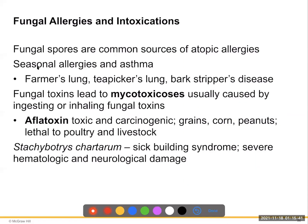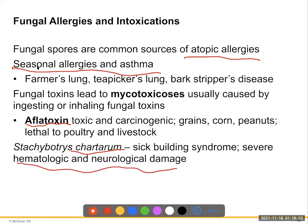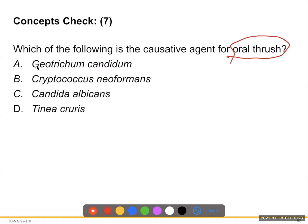Any fungus can be implicated in infections when immune defenses are compromised. Geotrichum candidum causes geotrichosis — a mold found in soil and dairy products, primarily involved in secondary lung infections. Fusarium species from soil can infect eyes, toenails, and burned skin. Fungal spores are common sources of atopic allergies including seasonal allergies, asthma, farmer's lung, tea picker's lung, and bark stripper's disease. Fungal toxins lead to mycotoxicosis — aflatoxin from grains, corn, and peanuts is both toxic and carcinogenic, lethal to poultry and livestock. Stachybotrys chartarum causes sick building syndrome with severe hematologic and neurological damage. Candida albicans is the causative agent of oral thrush, causing white patches in the mouth — it takes over when antibiotics kill normal flora or when there is immunodeficiency.